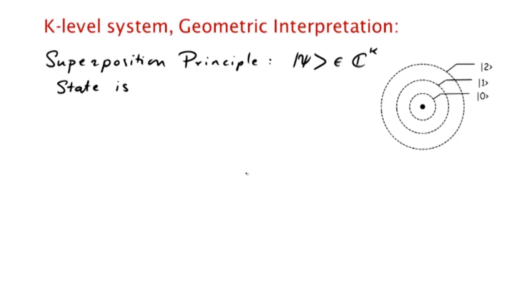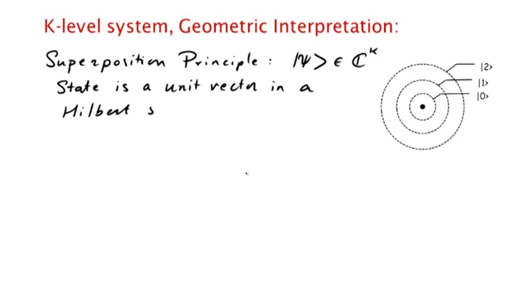The state is given by a unit vector in a k-dimensional complex vector space, and this vector space is also called a Hilbert space.